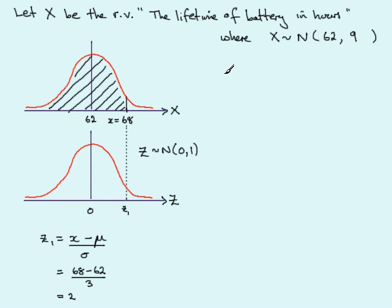So what are we saying then? We're being asked to work out the probability that our random variable X, the lifetime of the battery, is less than 68 hours. And if we standardize this, this is equivalent to working out the probability that Z is less than 2.